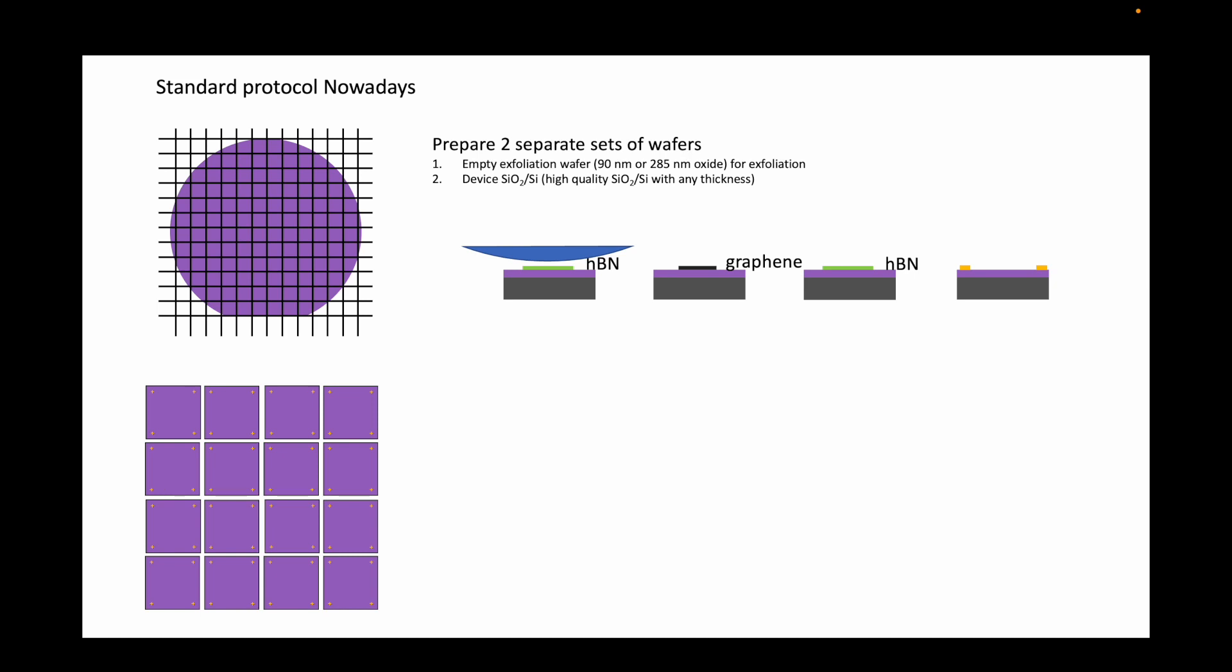The wafer for exfoliation does not require any pre-patterning. Bare 285 nm or even 19 nm silicon silicon dioxide can be used for this purpose. But keep in mind that if we use the 19 nm for the traditional method of fabricating the device on the area where we exfoliate, then you may win the battle in optical contrast, but may lose the war on yield since 19 nm silicon dioxide are more prone to puncturing during wire bonding.